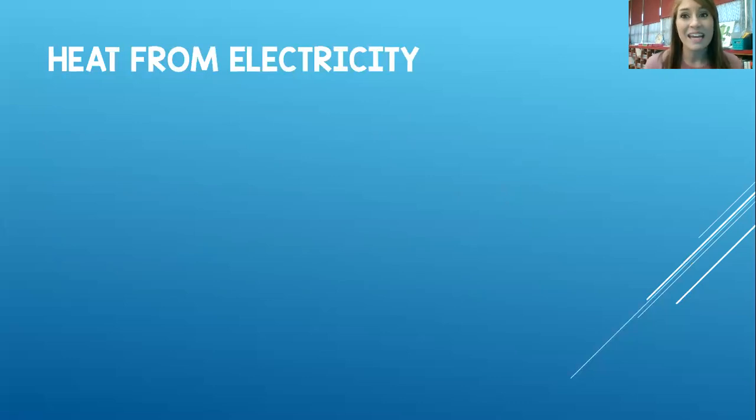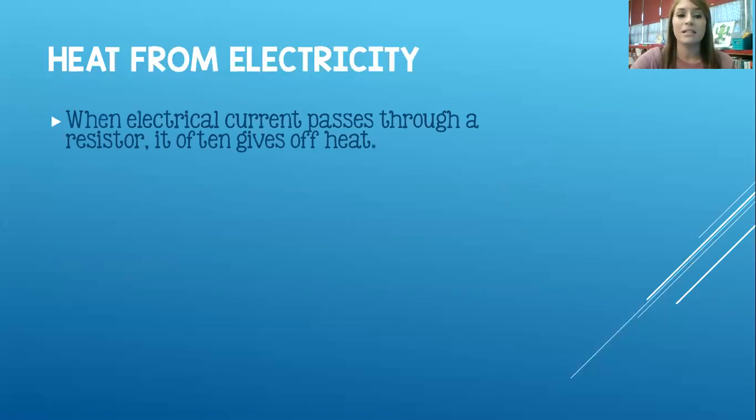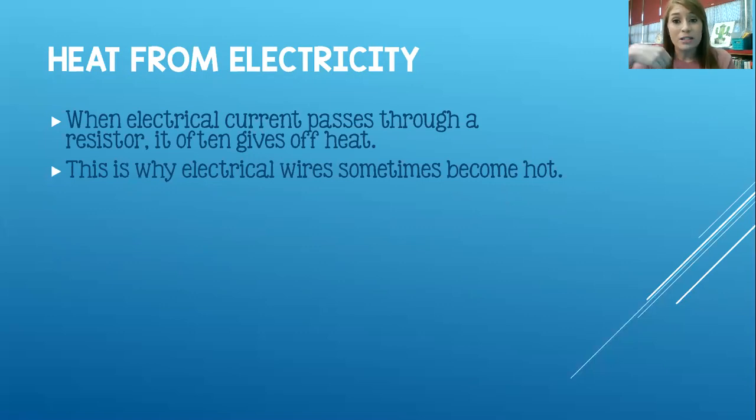All right. The last thing we're going to talk about for the week and for today is heat from electricity. So when electrical current passes through a resistor, it often gives off heat, just like we talked about the last slide with the filament and a light bulb. That's why electrical wires can become hot sometimes. Most electrical wires have a good insulator on the outside. Remember we talked about insulators last week. Insulators kind of hinder that electrical flow. So this protects us from those wires on the inside. The insulators on the outside of the cords, but the wires on the inside do become hot.